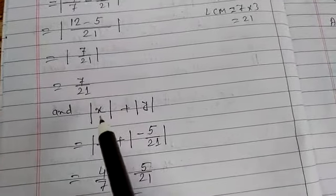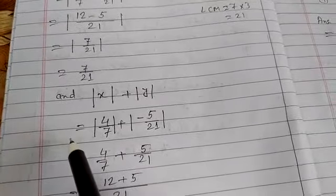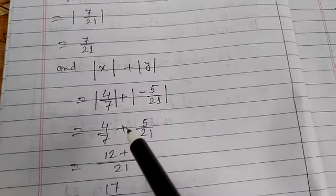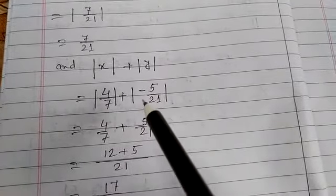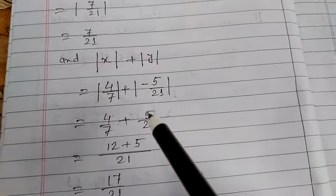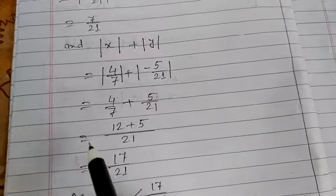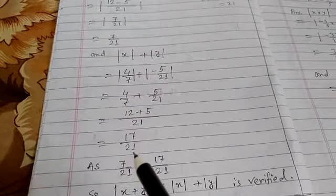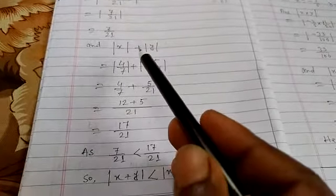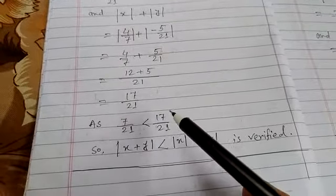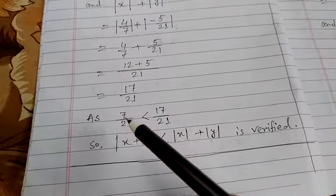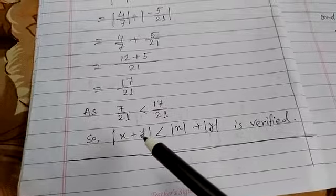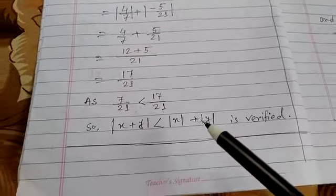And |x| + |y| equals, we put the value of x and y equal to |4/7| plus, since absolute value of a number is positive, we get positive 5/21. Equal to, by the rule of addition, we get 17/21. Therefore, 7/21 less than 17/21. So |x + y| < |x| + |y| is verified.